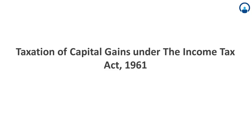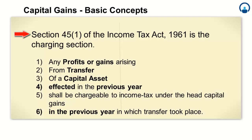Let's start with the basic concepts under this head. Section 45 of the Income Tax Act 1961 is the charging section for taxability of income under the head capital gains. It says: any profits or gains arising from transfer of a capital asset effected in the previous year shall be chargeable to Income Tax under the head capital gains in the previous year in which the transfer took place. We will look at each of these concepts in detail.